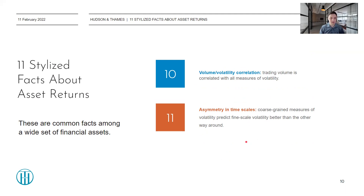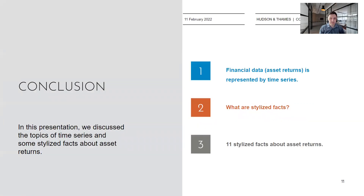That was the last of the 11 stylized facts discussed in Rama's paper. I would encourage you to look at the paper if you're interested, where Rama goes into much more detail than covered here. In conclusion, I briefly gave a discussion on financial time series data for asset returns, gave a brief meaning of what stylized facts are — common qualitative statistical properties across many financial instruments — and listed the eleven stylized facts about asset returns as presented in Rama's paper.